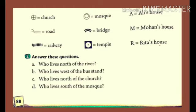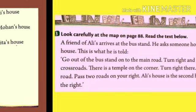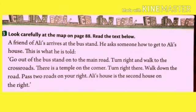To get the answer, first look at the symbol of the river, then look north of the river. You will find 'M', which means Mohan's house. That means Mohan lives north of the river. Do the rest of the questions the same way, looking carefully at the map.